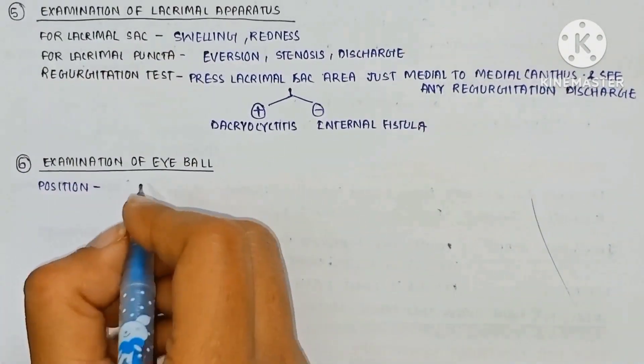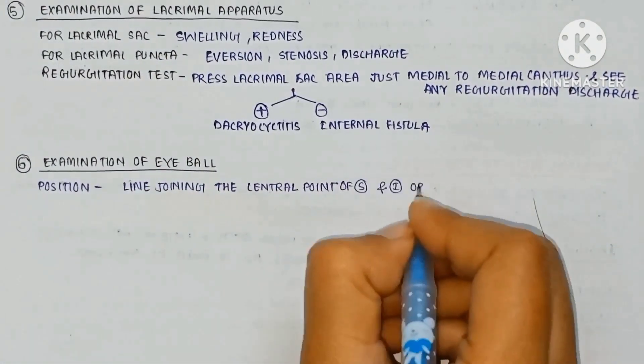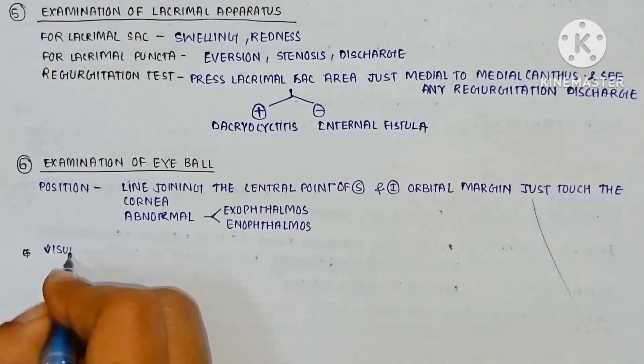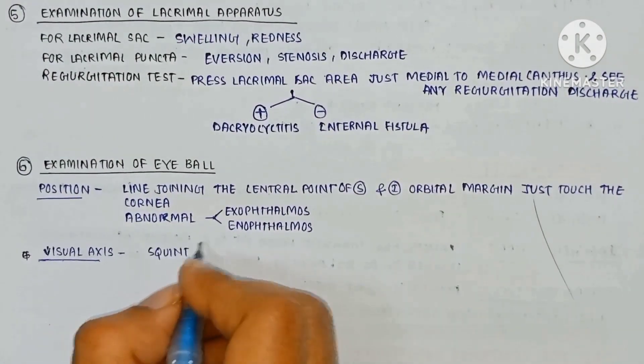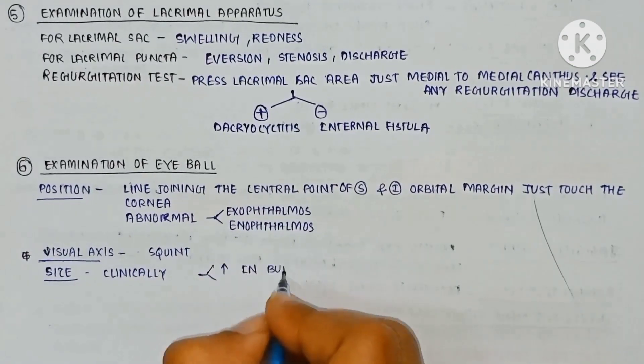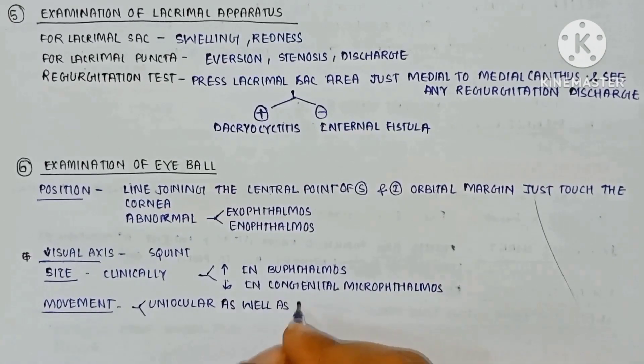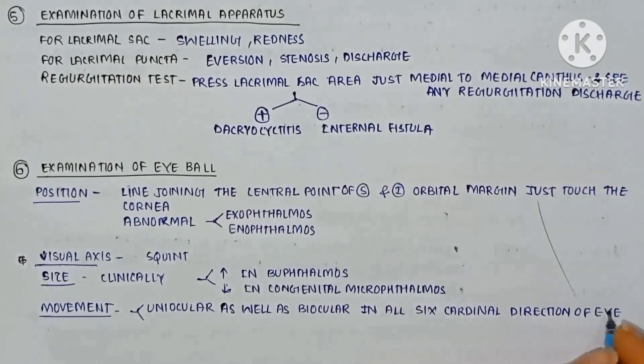The examination of the eyeball, the position: line joining the center point of the superior and inferior orbital margin just touches the cornea. Abnormal in exophthalmos and enophthalmos. The fixation is abnormal in squint. The size is increased in buphthalmos and decreased in congenital microphthalmos. The movement is uniocular as well as binocular in all six cardinal directions of the eye.